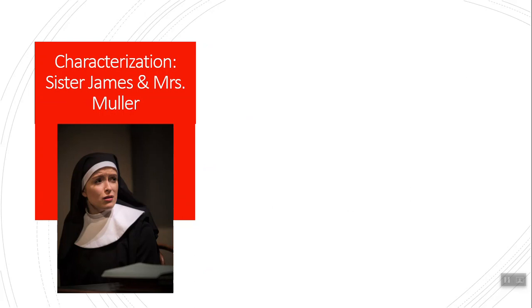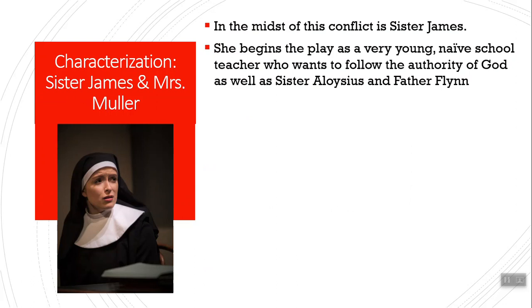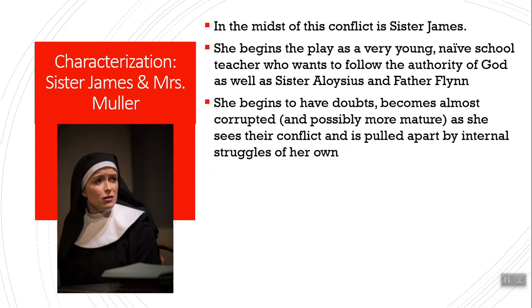Characterization: this is a staged version of the play showing Sister James — you can see how young she is. In the midst of all this conflict is Sister James. She struggles with a lot of internal conflict. She begins the play as a very young, naive teacher who just wants to follow God's plan for her. She looks up to both Sister Aloysius and Father Flynn, and at the beginning she really loves and respects them both. Part of her conflict is that it's almost like she's the child of a divorce — Sister Aloysius is the mom, Father Flynn is the dad, and they're fighting and she doesn't know what to do. She begins to have doubts and is almost corrupted — not in a dramatic sense, but corrupted in the sense that she no longer sees everyone as good. No one in this play is exactly a minor character.